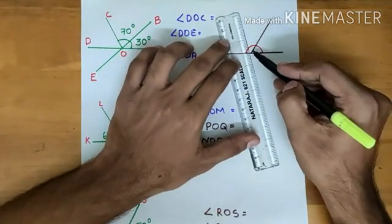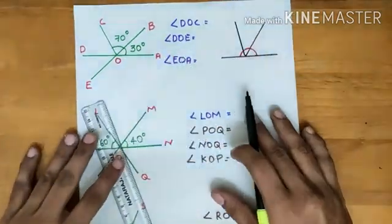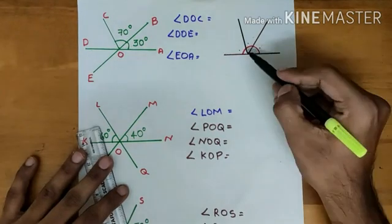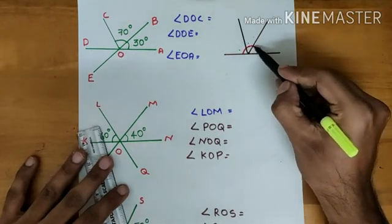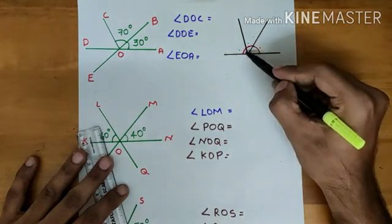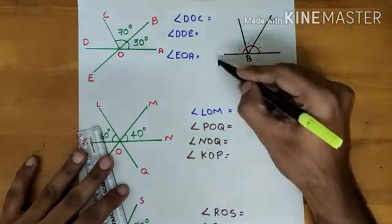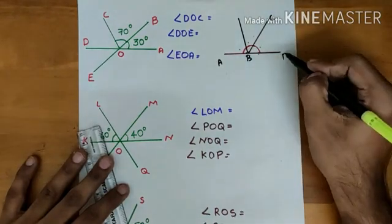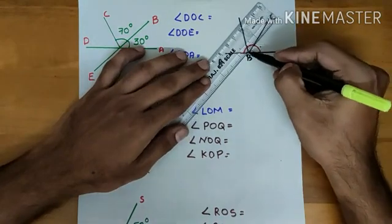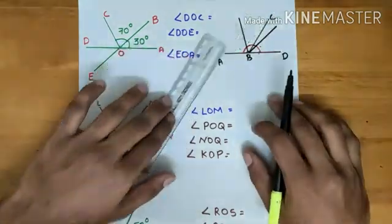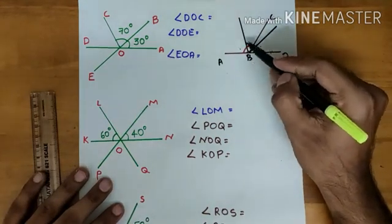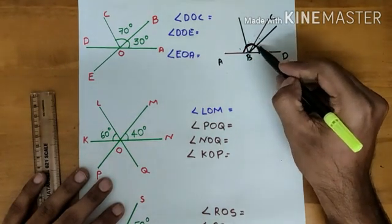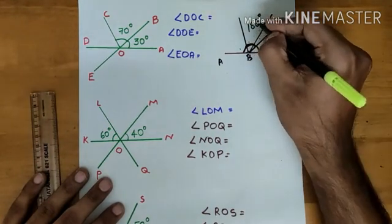Suppose I am drawing a line like this. What is the total number of angles now? It is one, two, and three. Is there any change in the sum? No. It is again 180 degrees, because this one angle A, B, C is splitting into two angles. Suppose I am also drawing another line like this. Now the number of angles will be one, two, three, four. Is there any change in the sum of these four angles? It is again 180 degrees.